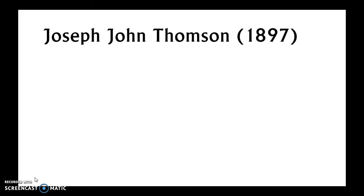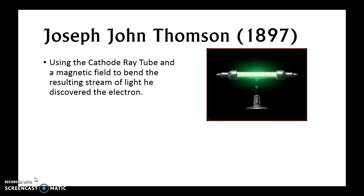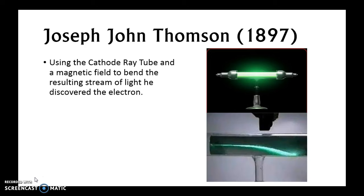Next is Joseph John Thompson, or JJ Thompson. His discoveries were published in 1897, though they probably began occurring sometime in the 1870s because of the Industrial Revolution. He used something called a cathode ray tube and magnetic fields. When he bent the resulting stream of light, he discovered that things had to have electrons in them. Here is what a cathode ray tube looks like.